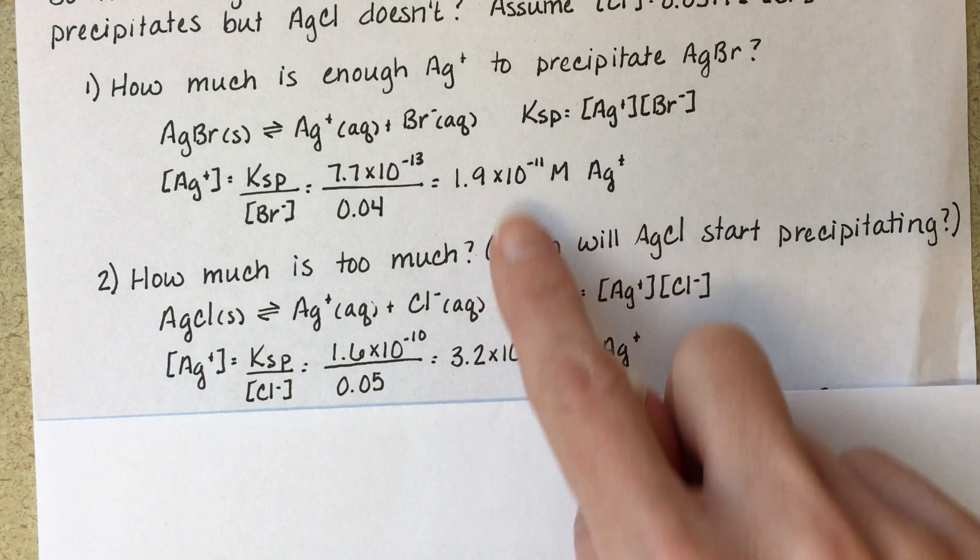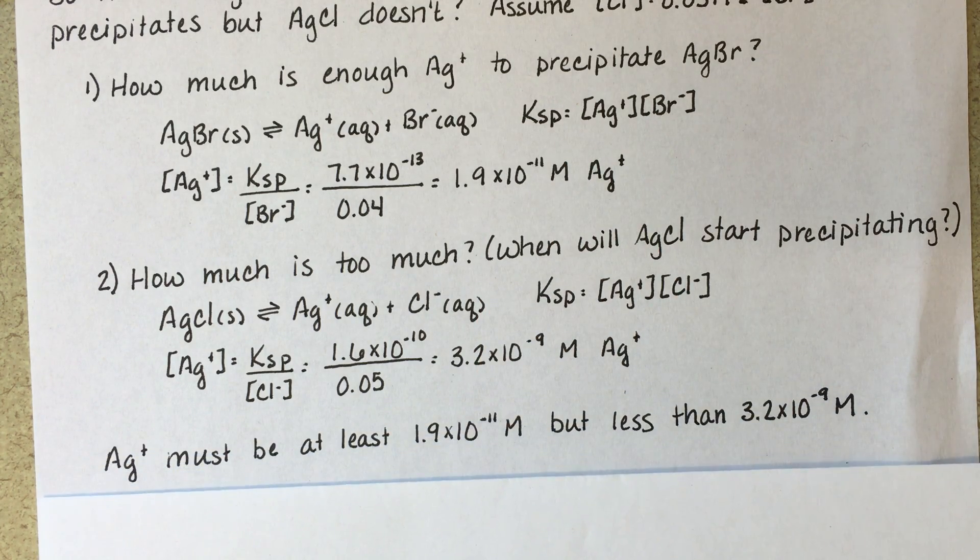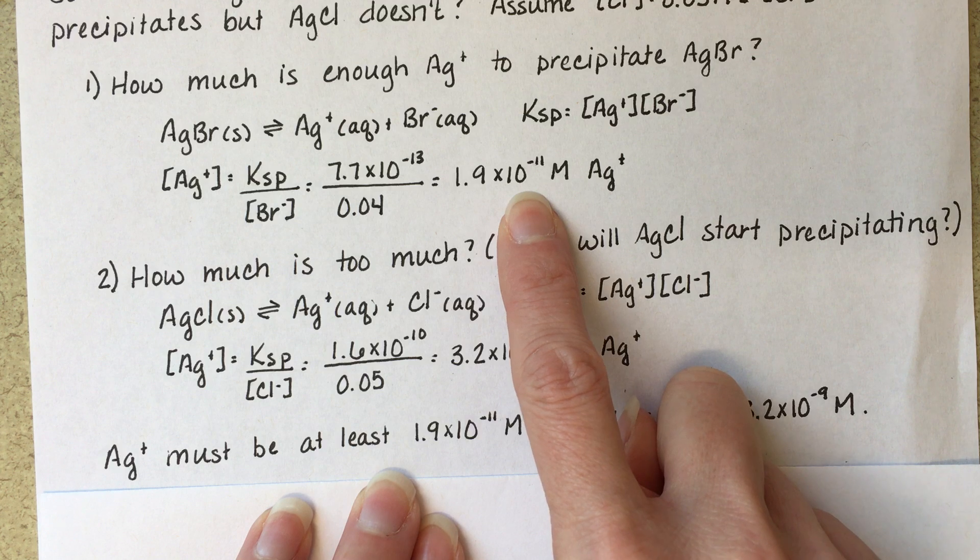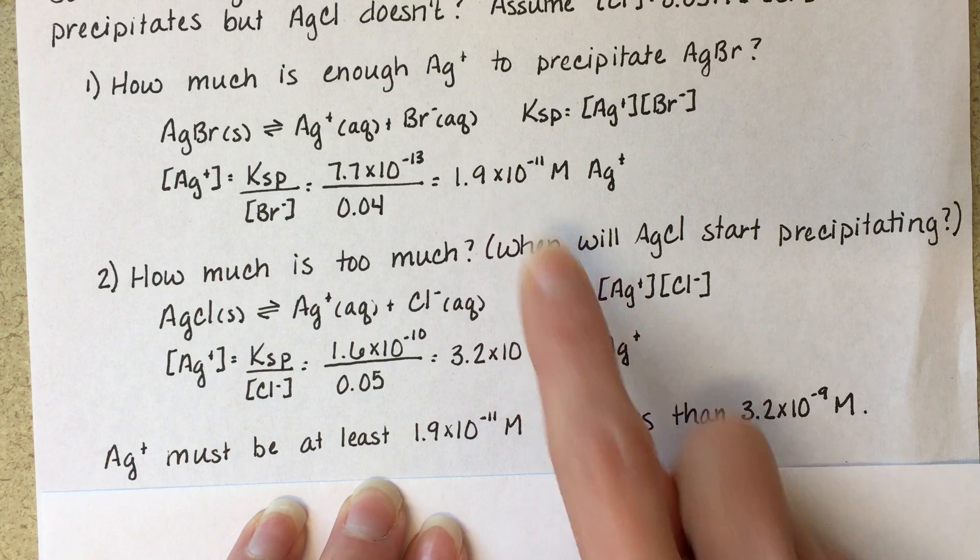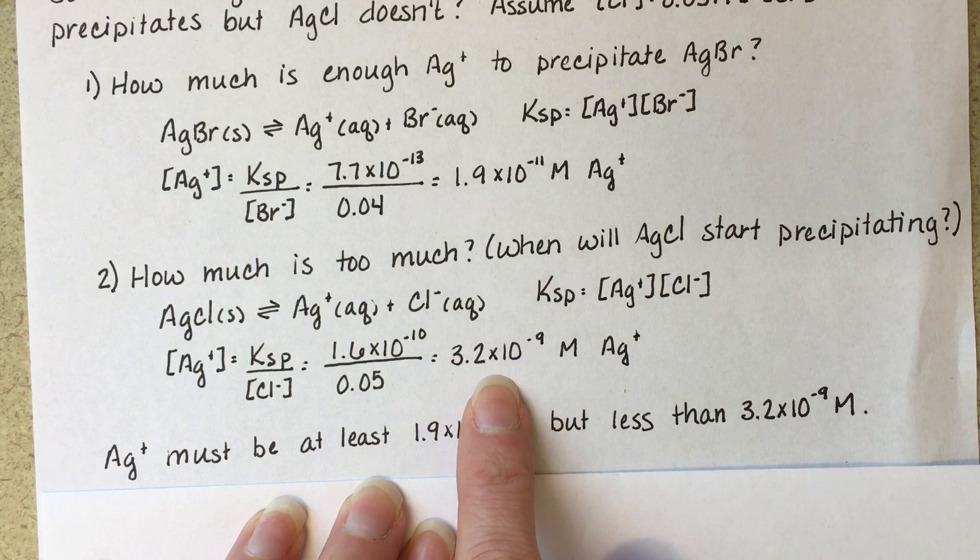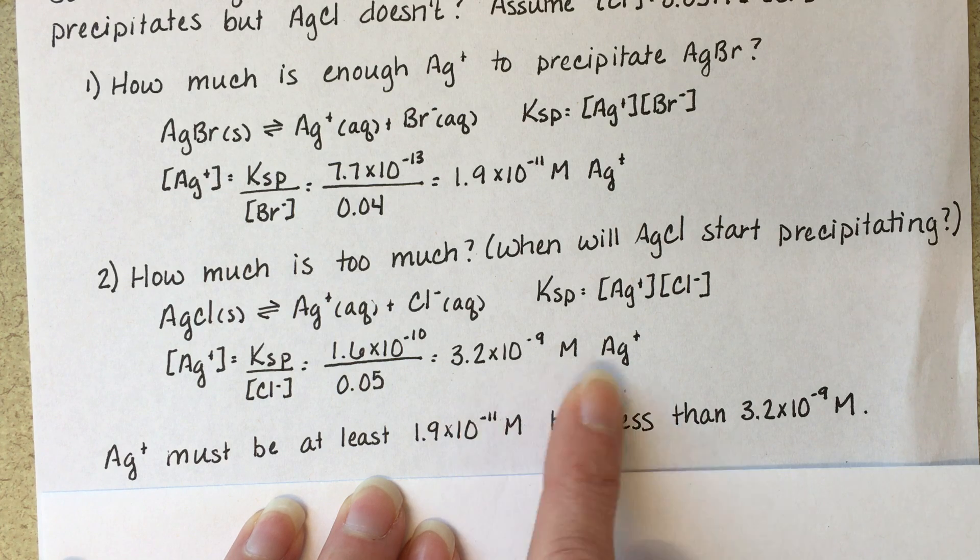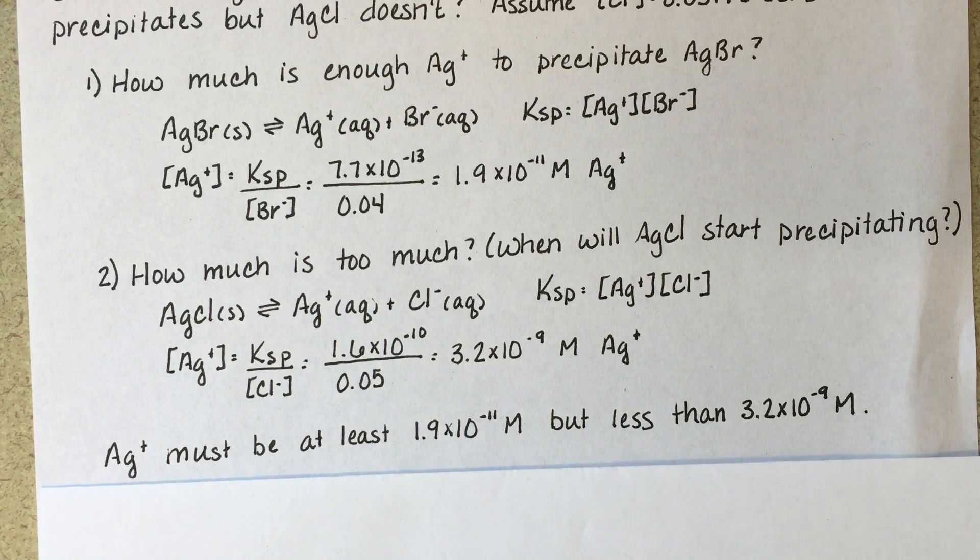So somewhere in between these two numbers is where we want to be. We have to have at least this much in order to get the silver bromide to precipitate. But we don't want to have this much so that silver chloride will not precipitate.